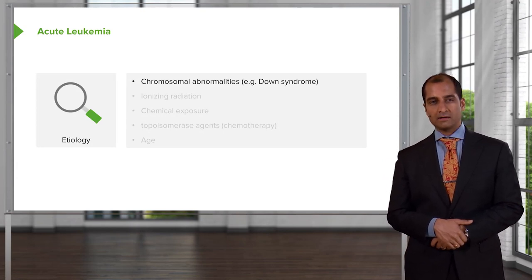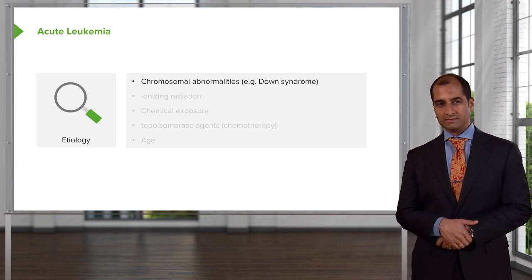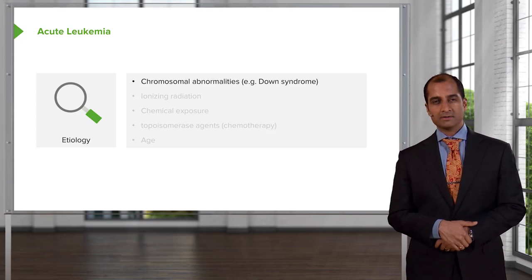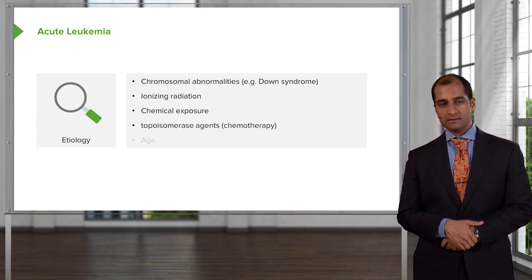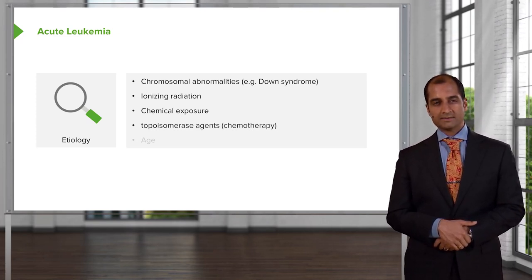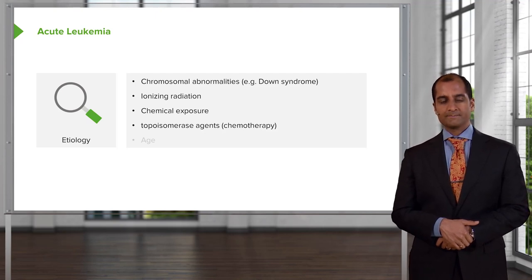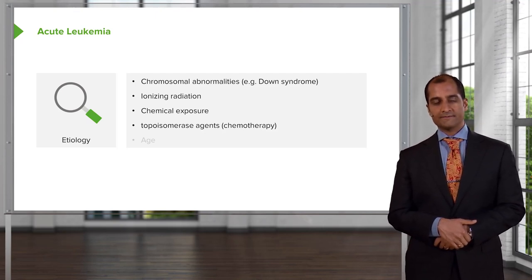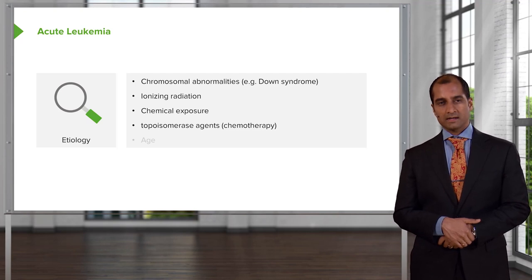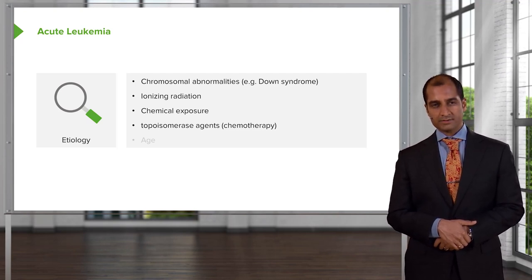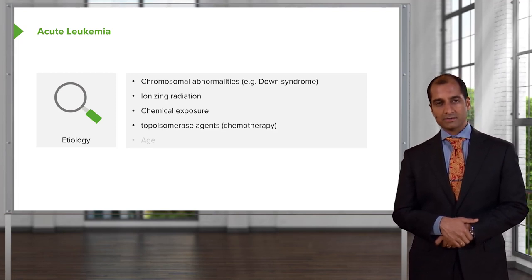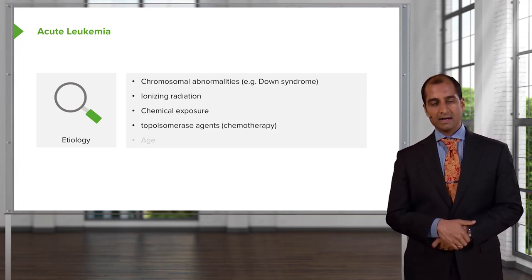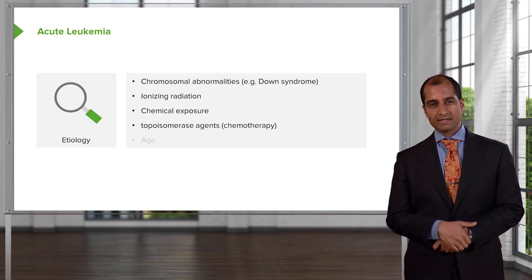Etiology: chromosomal abnormalities are a possibility — Down syndrome is something we'll take a look at with ALL. Ionizing radiation, chemical exposure, or perhaps alkylating agents. You should be asking yourself what this means: a patient was receiving chemotherapy for another type of cancer and, while receiving that chemotherapy, unfortunately develops another type of leukemia. So alkylating agents used for prior cancers might give rise to new leukemias.